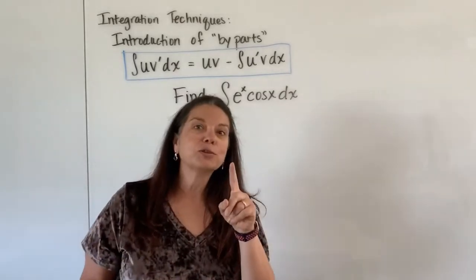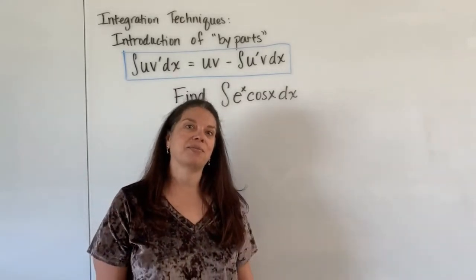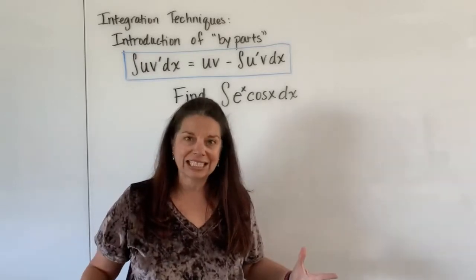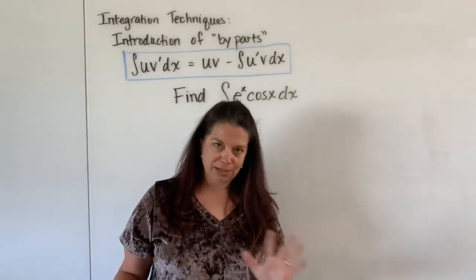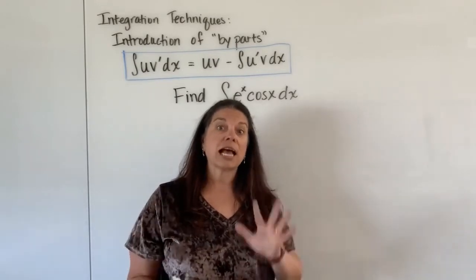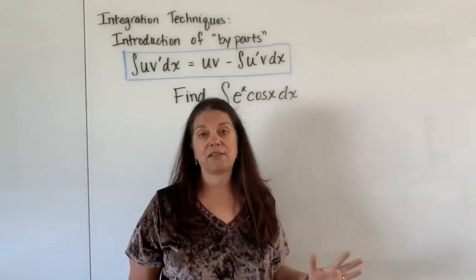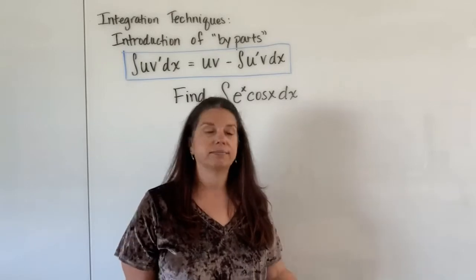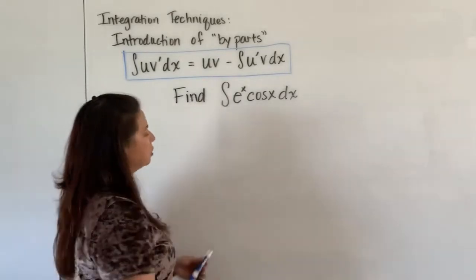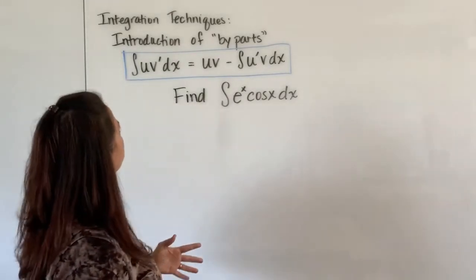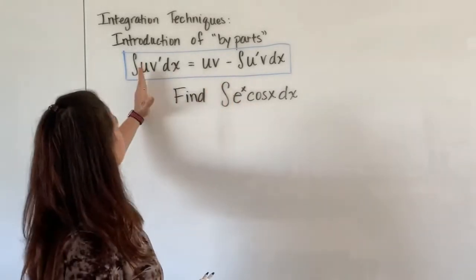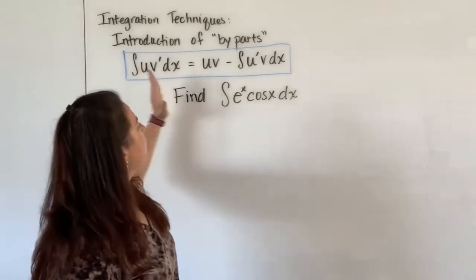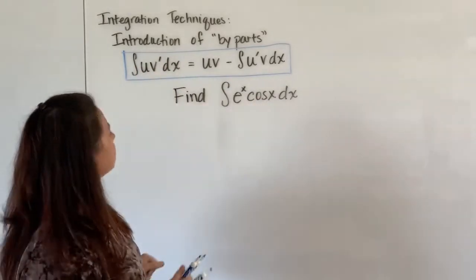And then there's one more little tricky thing that's going to come up that I want you to just be open-minded to. I tend to call this the loopy problem and you'll see why, because there's actually going to be a looping thing that kind of happens that we have to mitigate and take care of. So I'm going to start this problem just like all the others and I'm going to match up. The first function e to the x is going to be designated as my u. Cosine x will be designated as my v prime.